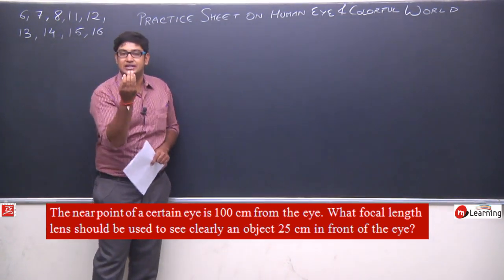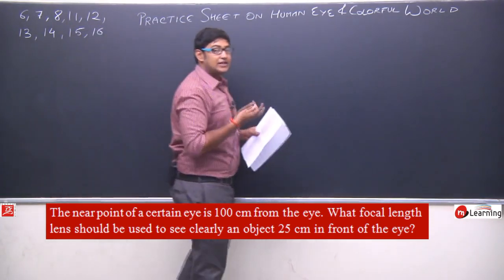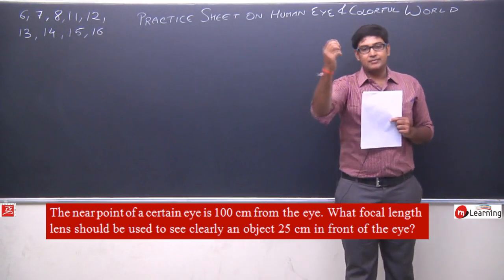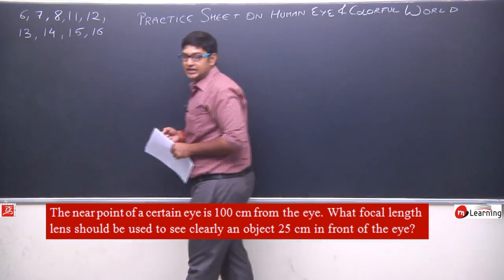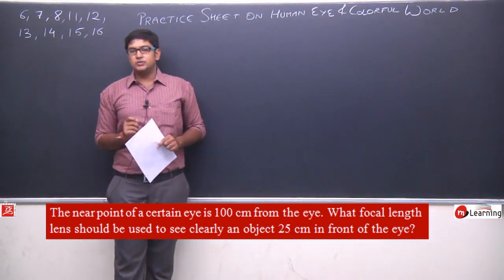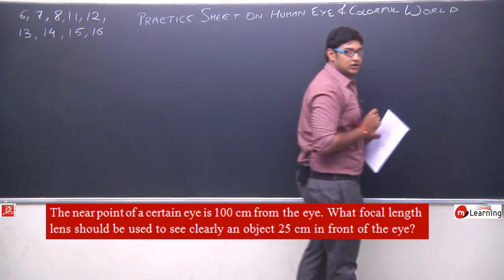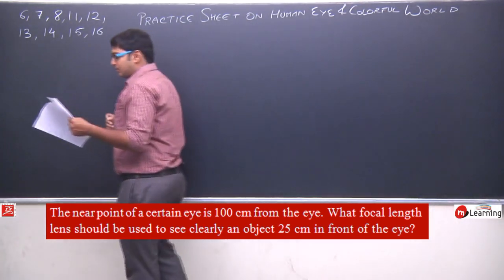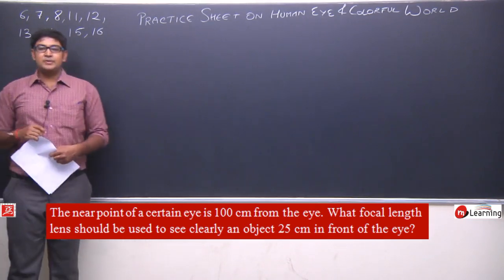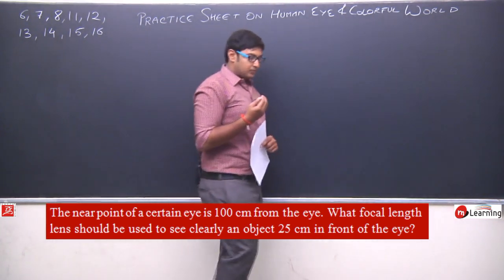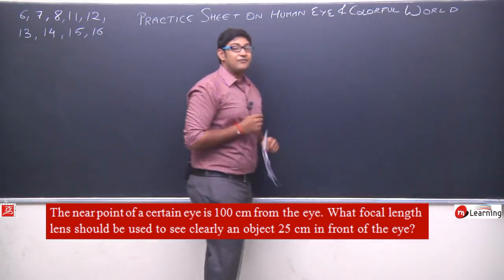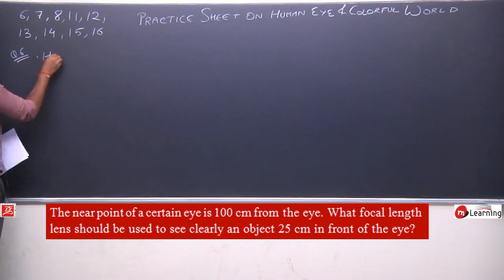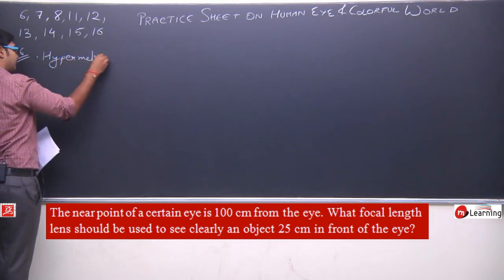If I come closer than 100 cm, I will not see the object clearly because my near point is 100 cm. If I go beyond 100 cm, then I can see the object. In this question, far point is not discussed. Near point and far point are two terms which should be clear. This defect is hypermetropia.